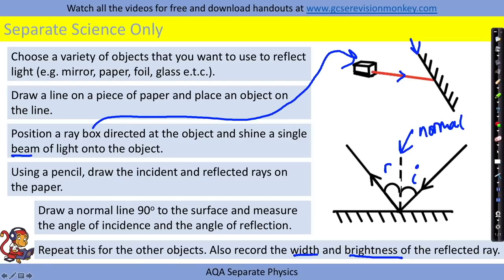However, if you have more diffuse reflection you would have a wider ray of light coming out and it would be dimmer as well or perhaps you wouldn't see a reflected ray at all on some materials.